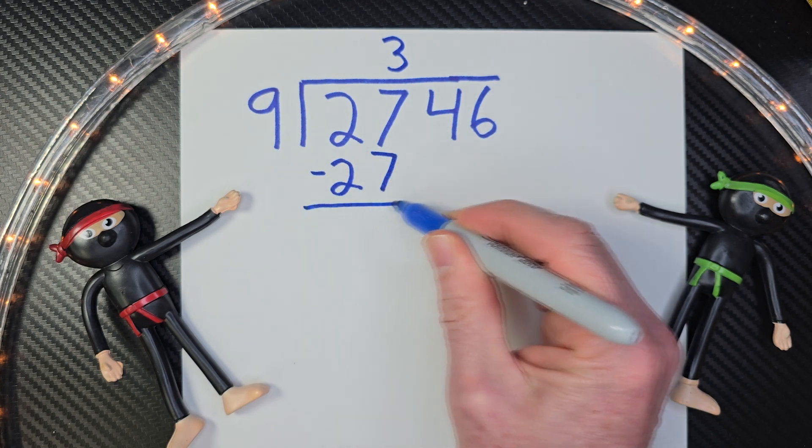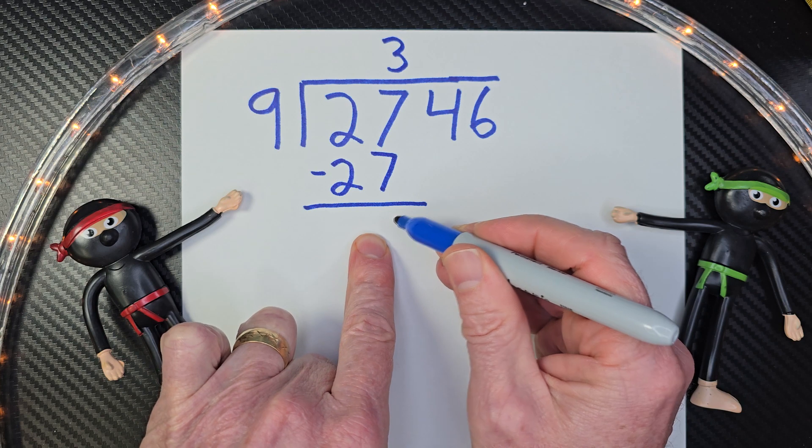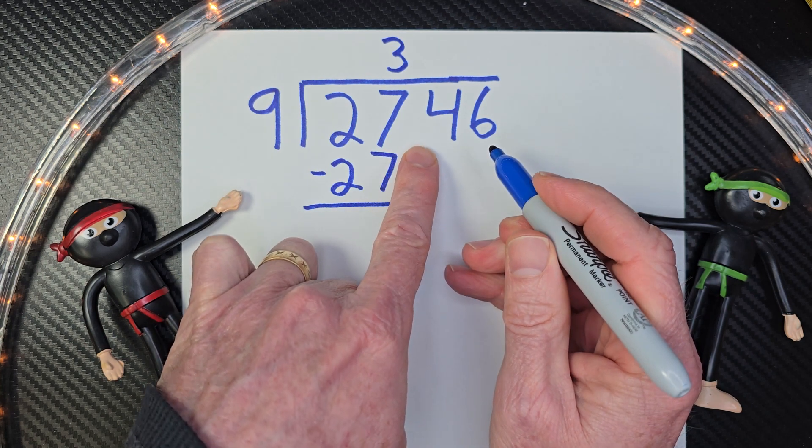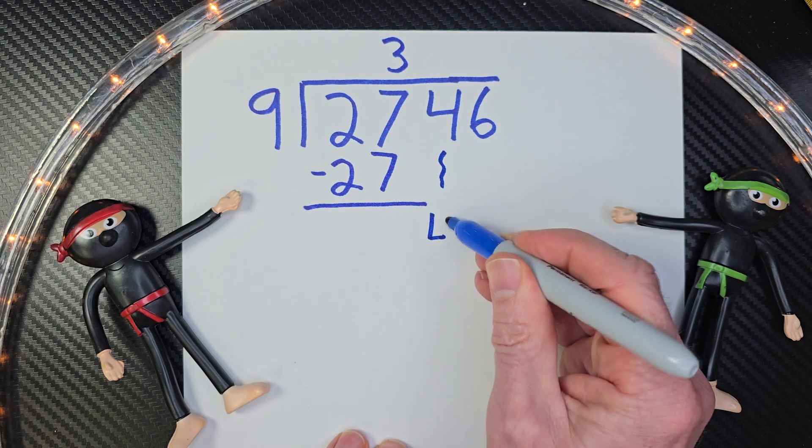Subtract, and then that would be a 0. We don't need to put a 0 right there. So we can just go right to the next number and drop it down. I'm going to bring this 4 all the way down here.